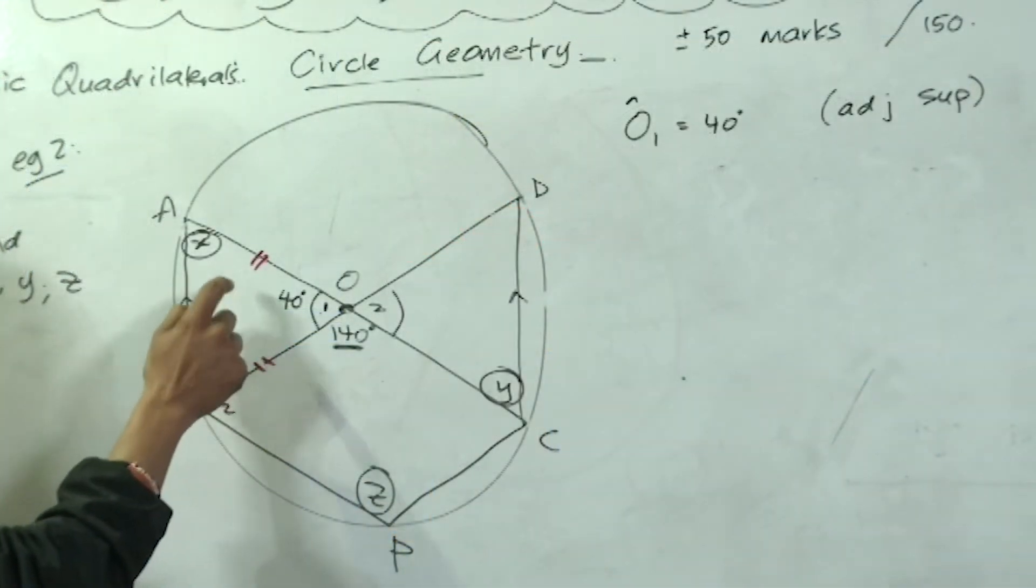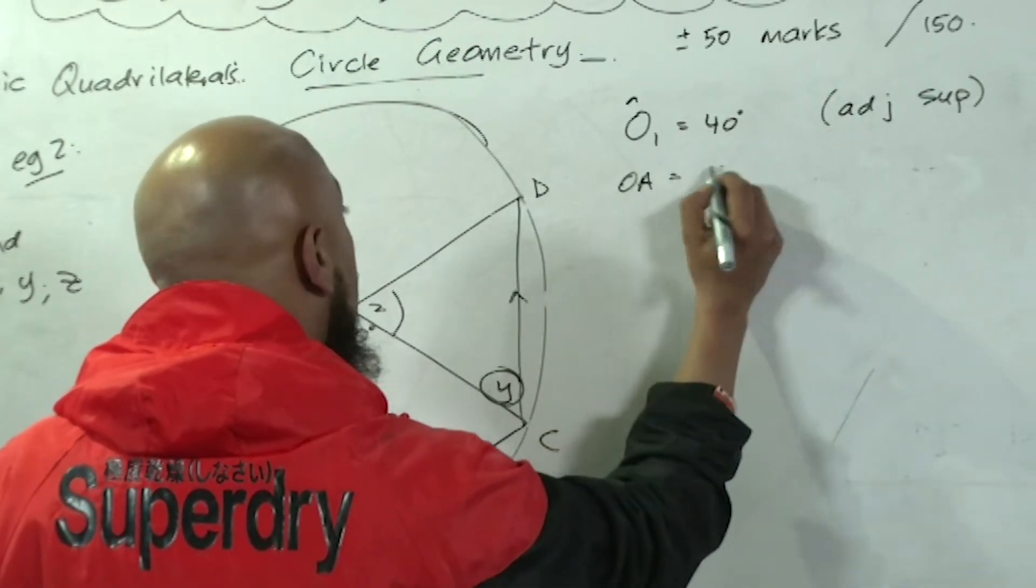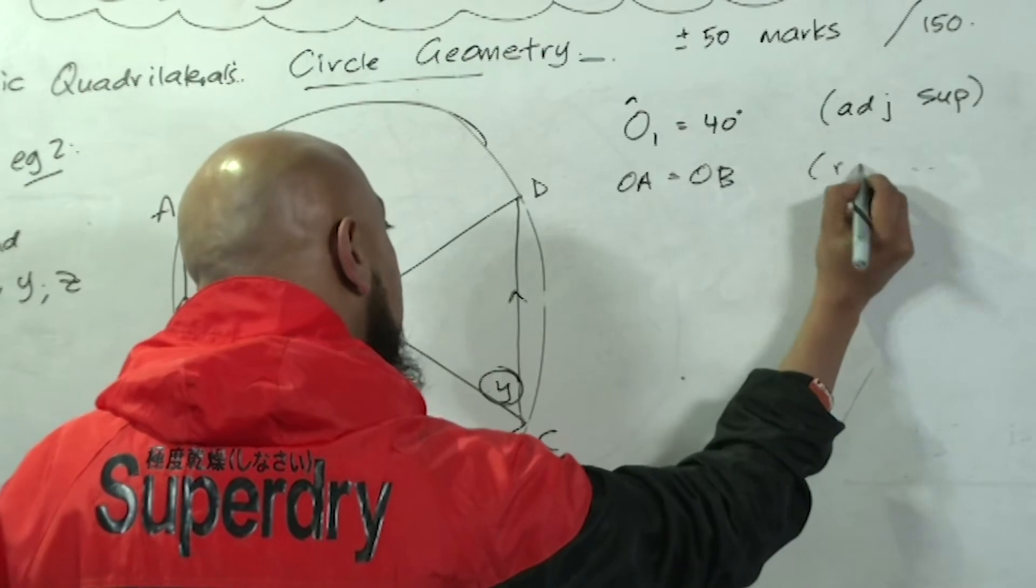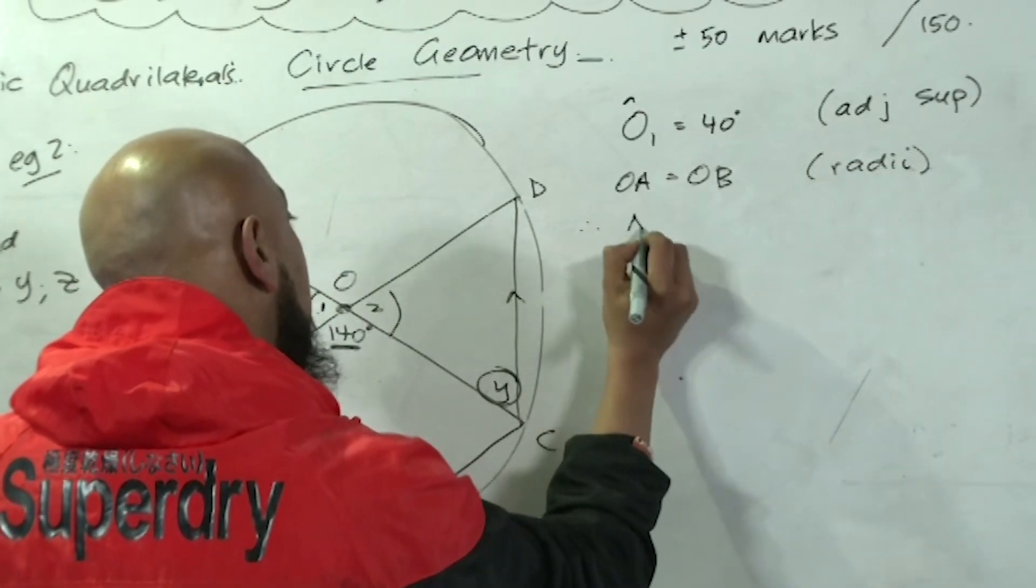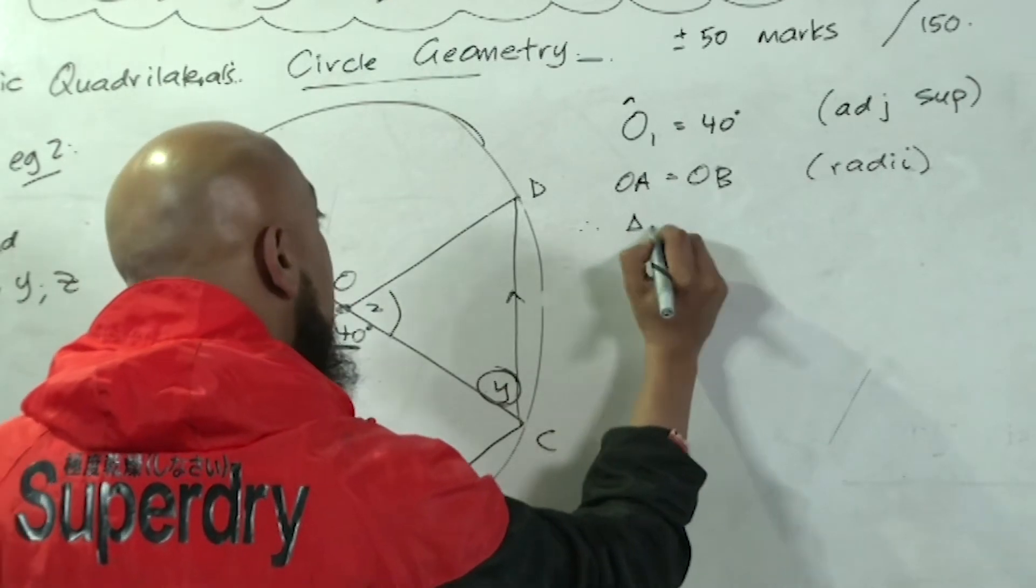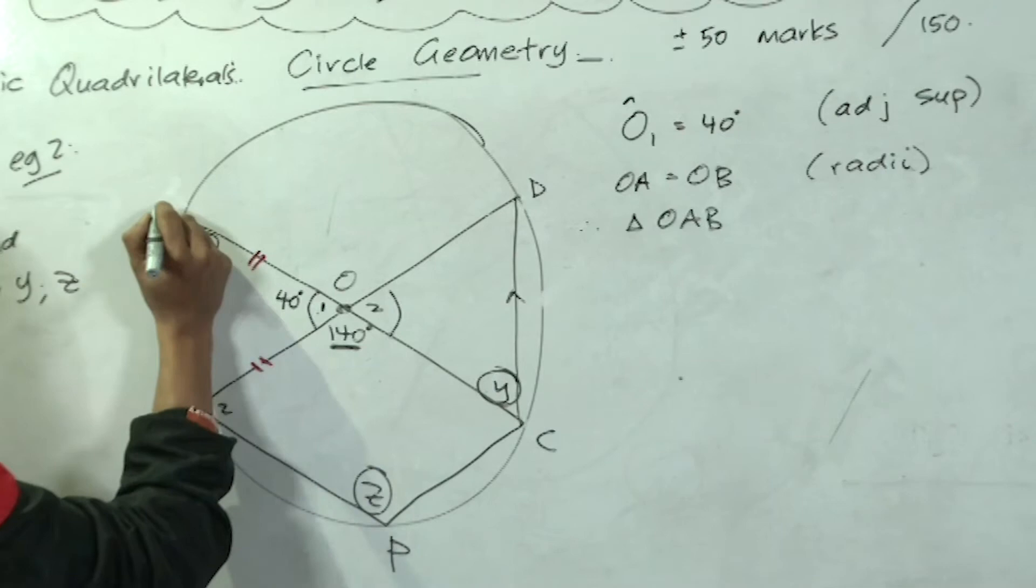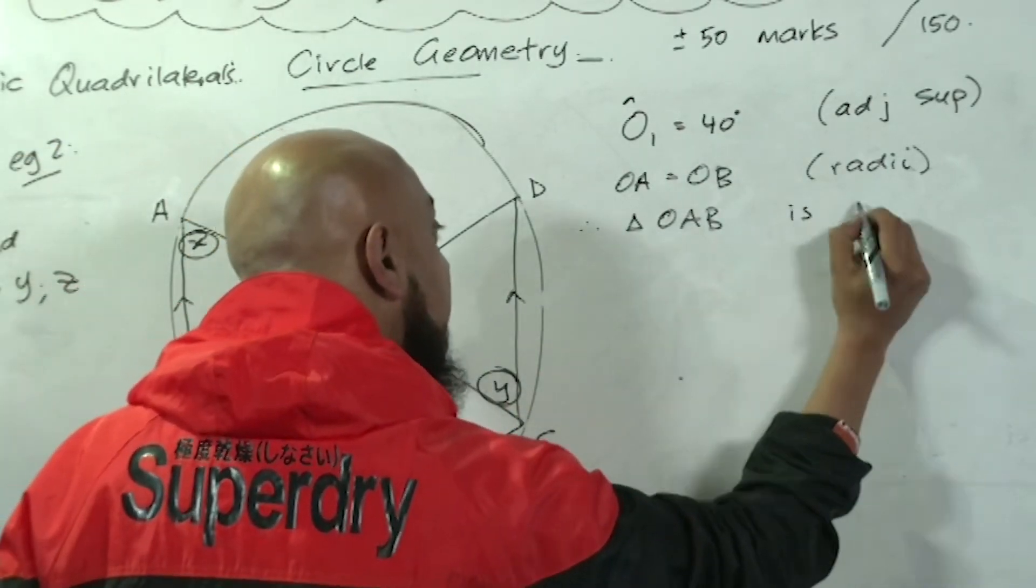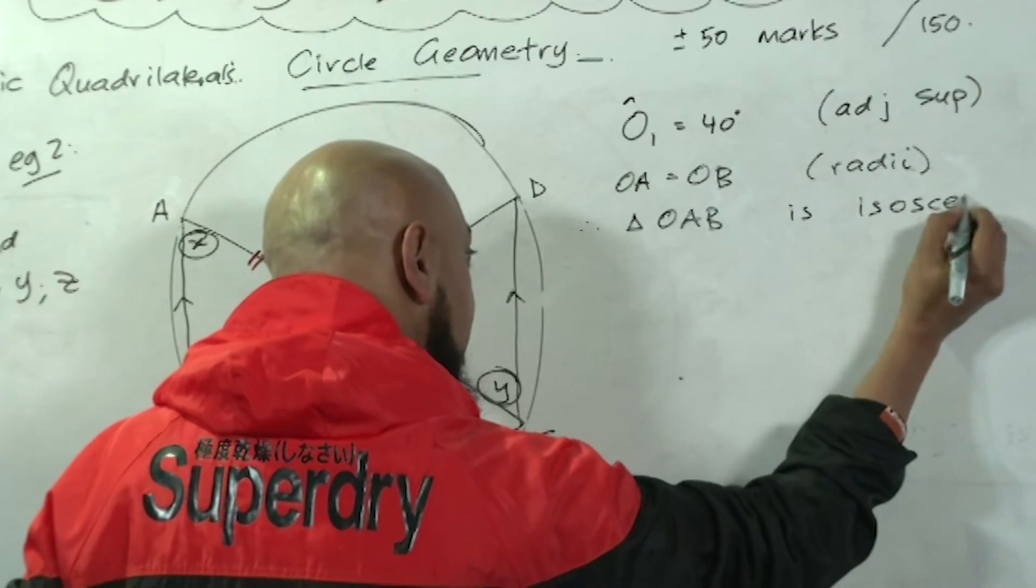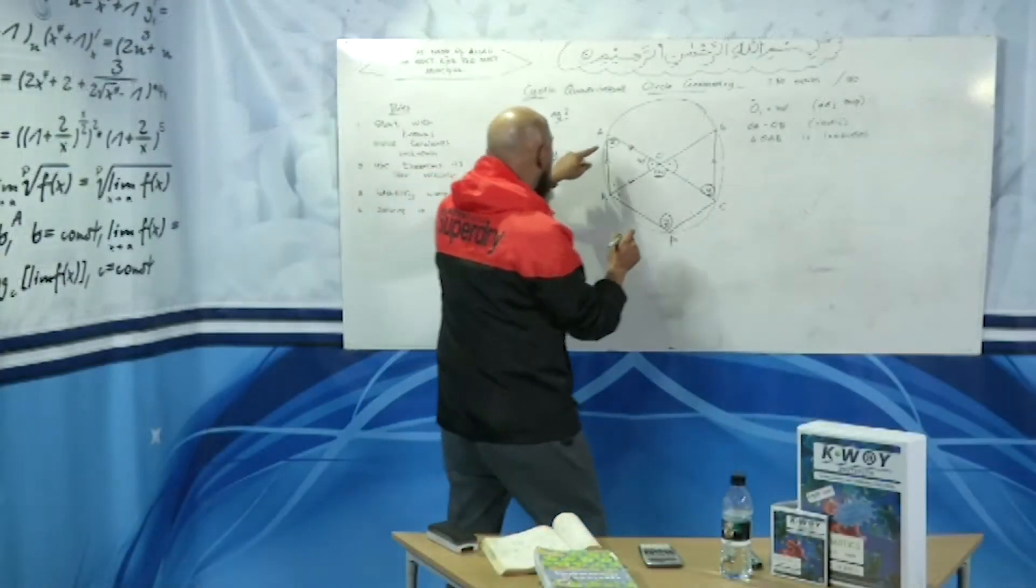What does that imply? If I've got two radii equal and I've got a triangle, I can conclude that this triangle is isosceles. So OA is equal to OB, radii. Therefore, triangle OAB is isosceles. And it being an isosceles triangle implies what? That the base angles are equal.